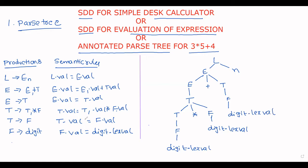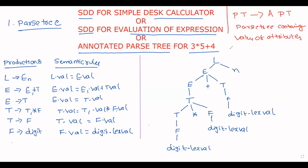This is our parse tree for the given expression. Now what is our aim? The parse tree is to be converted into an annotated parse tree. An annotated parse tree is simply a parse tree containing values of attributes at each node — that means every node in the parse tree contains values of its attribute. That parse tree is called an annotated parse tree.